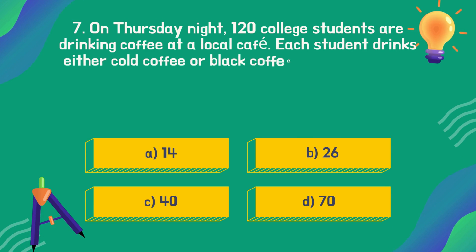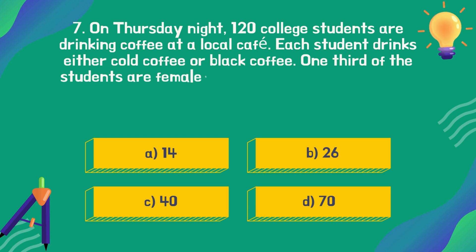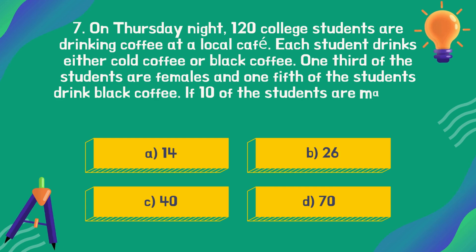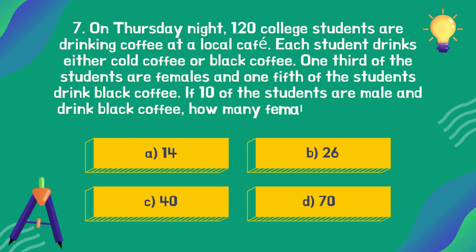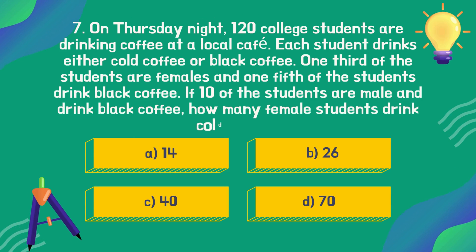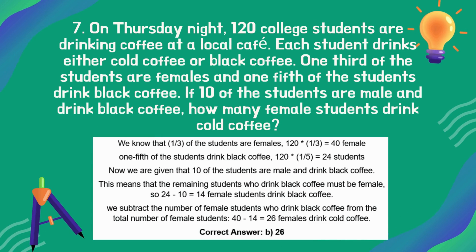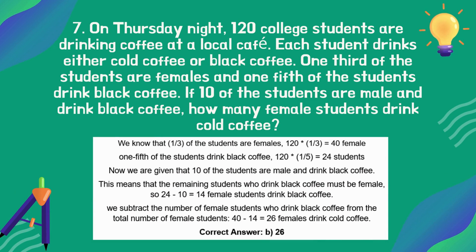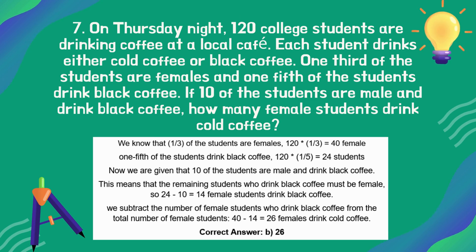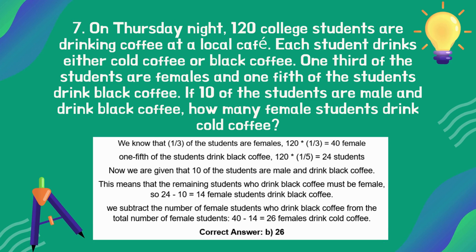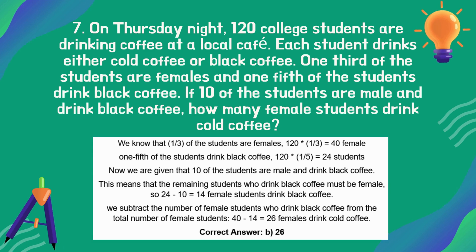On Thursday night, 120 college students are drinking coffee at a local cafe. Each student drinks either cold coffee or black coffee. One-third of the students are females and one-fifth of the students drink black coffee. If 10 of the students are a certain group, the correct answer is option B: 26.